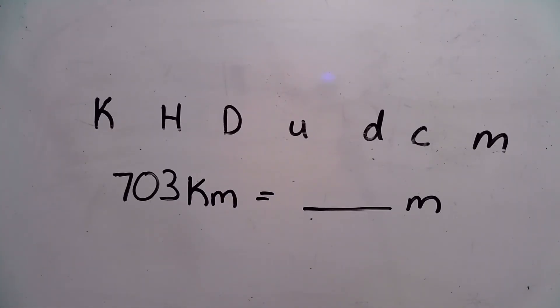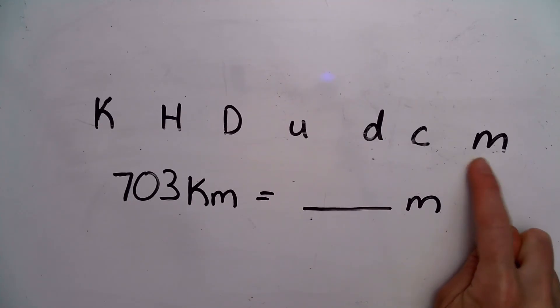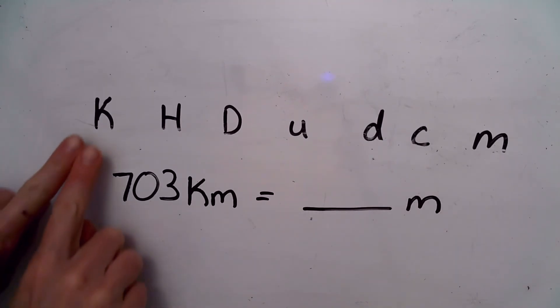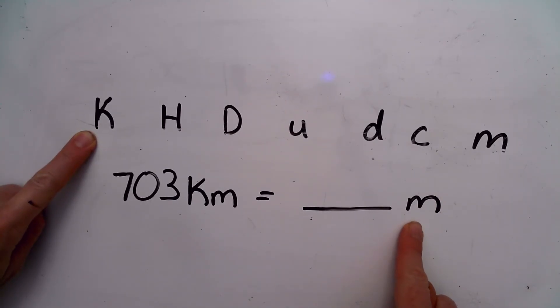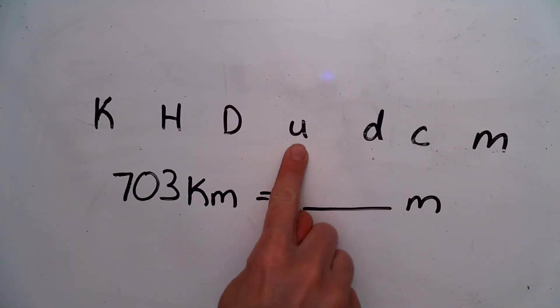This problem shows another situation where kids often make mistakes. If you want, you can pause and try to answer the problem on your own to see if you get tricked by this problem or not. What kids will do is they will see this M, and they will see that M. And they will go from kilo all the way to milli, even though this is not milli.